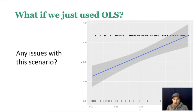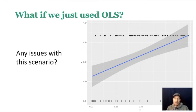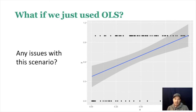As a reminder, one of the reasons why we're going to talk about logistic regression is OLS doesn't fit this scenario very well. Logistic regression works when you have an outcome that's binary, where it's zero or one. OLS is going to try to fit a straight line to that, and there is information we can get out of that, but there are issues with it as well.